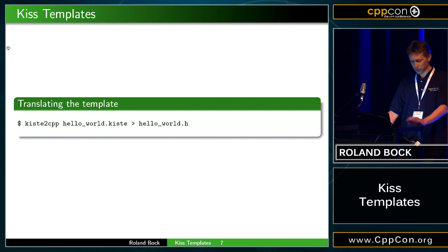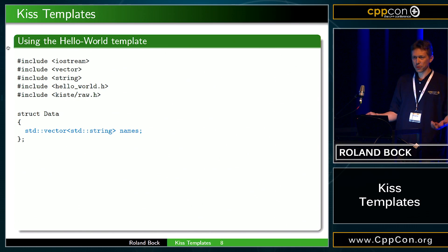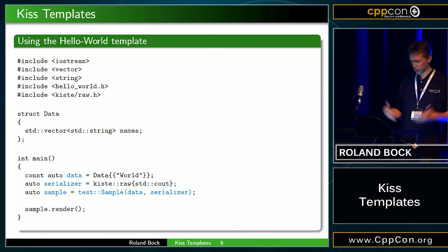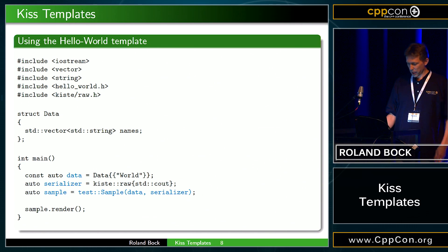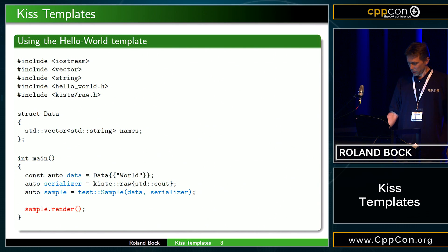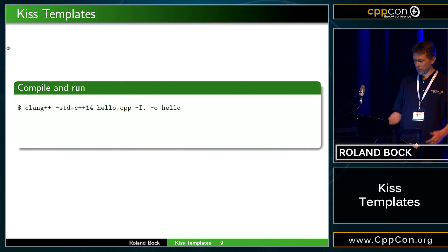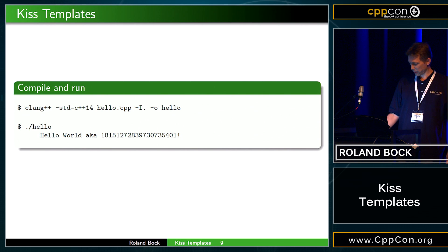We generated a header file from the template and included it in our own code. We have a data structure that we want to use in this template. Then we initialize the data with whatever, initialize a serializer — the serializer should be chosen according to the format we want to produce. Then we initialize the template with the data and the serializer, and call one of the functions we have in the template — in this case it's called render. That will feed the text and the data into the serializer, which also does the escaping, and it will do the reasonable thing. In this case, it will print hello world.